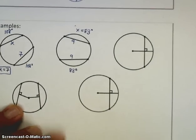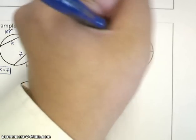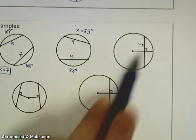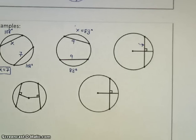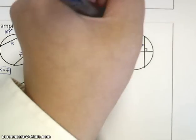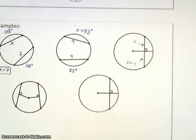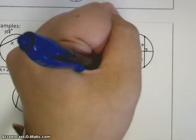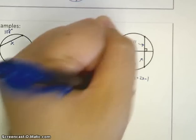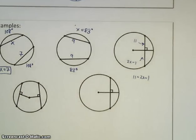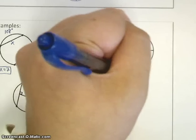In the third example, this radius here represents the perpendicular bisector of this chord. So, if this top chord measures 11, this bottom chord measures 2x minus 1, I can simply just set these equal to each other, solve this equation, and get a value of 6 as my answer.